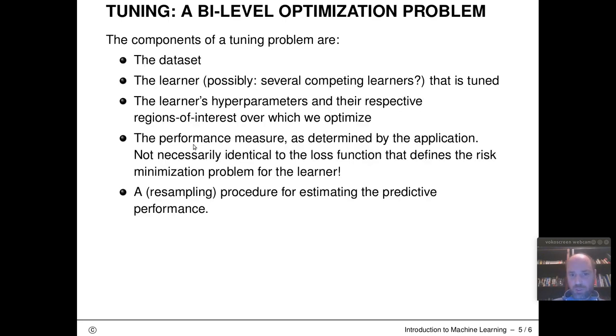This is usually determined by the application. Usually we don't have too many restrictions on this. It's also not necessarily identical to the loss function that defines the risk minimization problem for the learner. So why can this be different?